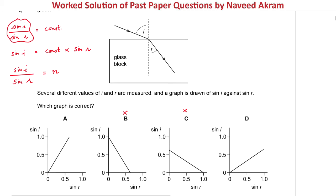Let's first check option D. If we take its slope: the change in y is about 0.7, and we divide by the horizontal distance which is 1, giving 0.7. However, the refractive index of any material cannot be less than 1 — it is always greater than 1. So option D cannot be the right answer.